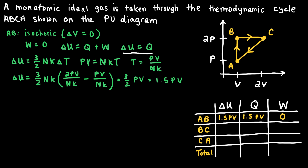Now let's do the same for the other two processes. The next process in the cycle is BC. Process BC is a horizontal line on the PV diagram, meaning the pressure is constant at 2P. A process where the pressure is constant is referred to as an isobaric process — one where the change in pressure is zero.